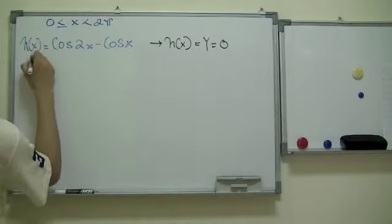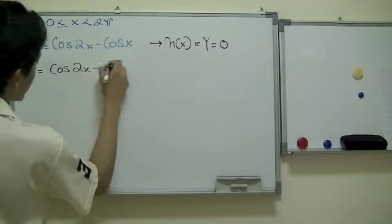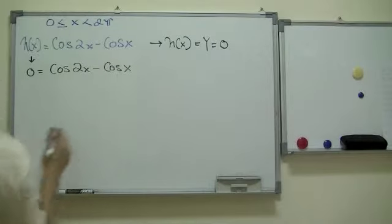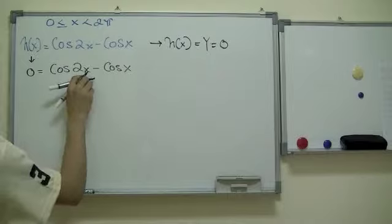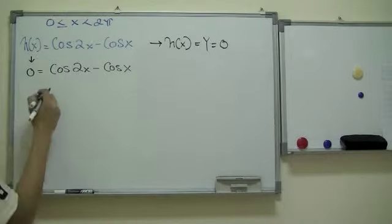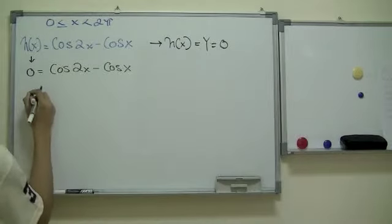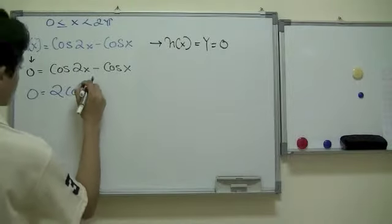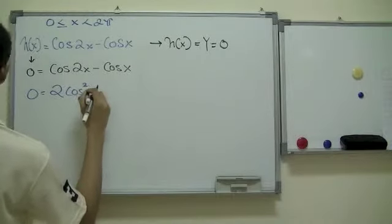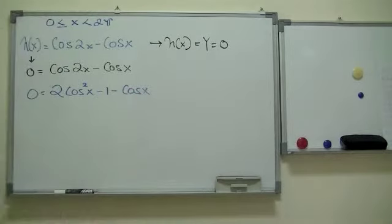This over here would be replaced with zero. So, zero would be equal to cosine of 2X minus cosine of X. Now, since this is 2X, we can use the properties — the formulas that were shown before this. So there would be zero equals two cosine squared X minus one, minus cosine of X.